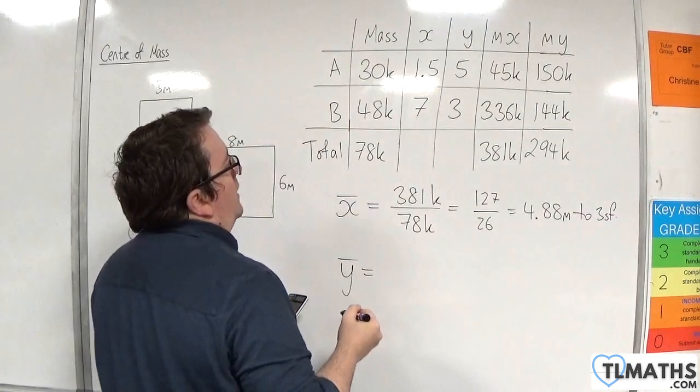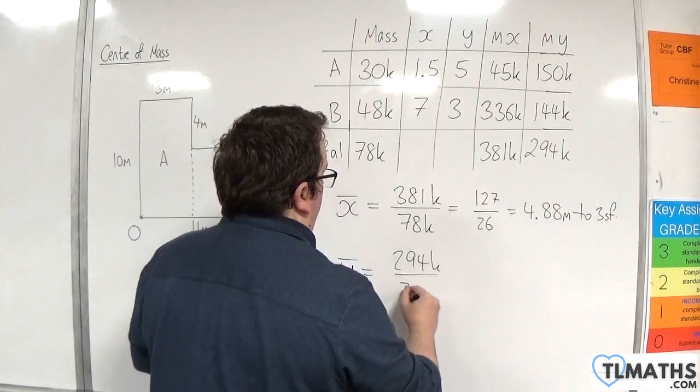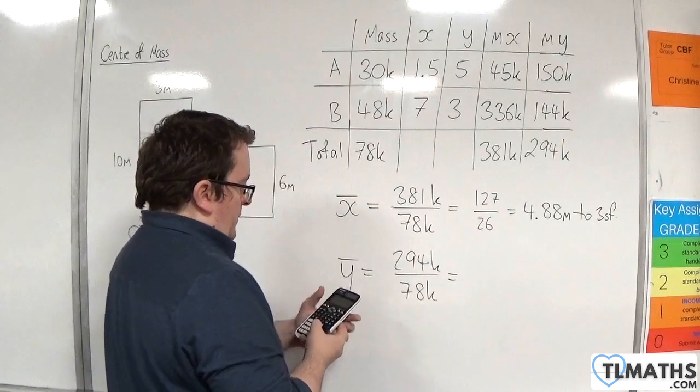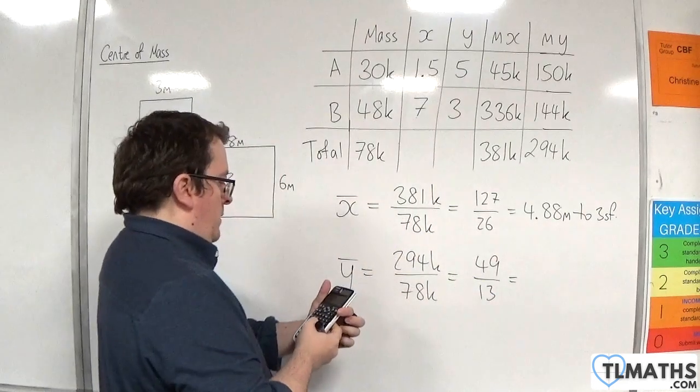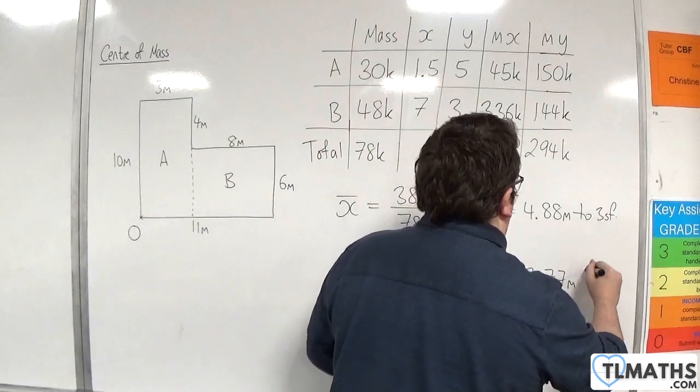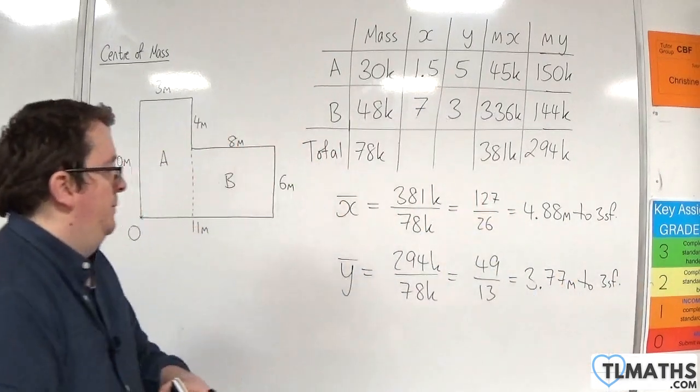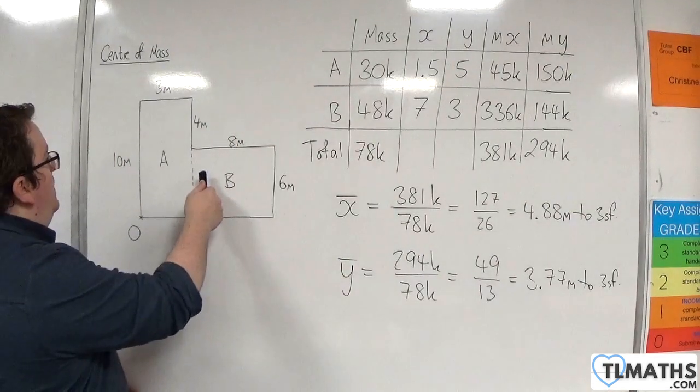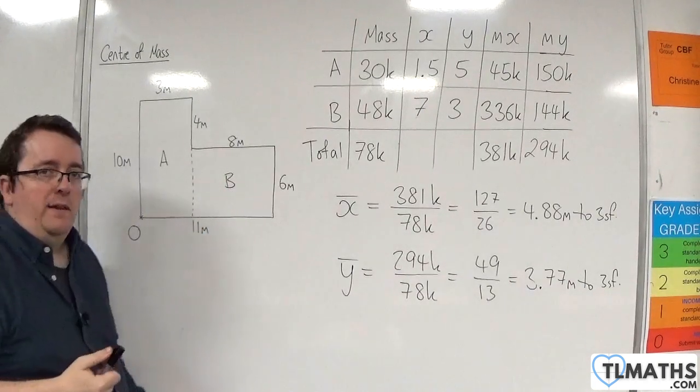And the average for the Y's will be 294K divided by 78K, which is 49 over 13, which is 3.77 meters to three significant figures. So 4.88 and then 3.77. So it's round about somewhere there, isn't it? Probably as you would expect it to be.